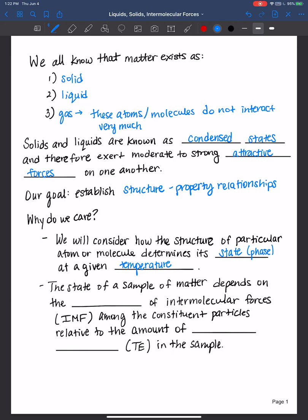The state of a sample of matter depends on the strength or the magnitude of intermolecular forces among the constituent particles relative to the amount of thermal energy in the sample. We will spend quite a time together in the next few videos discussing the different types of intermolecular forces, which I will abbreviate as IMF, and understanding their strength. And that will tell us a lot about how that molecule behaves with itself and with other molecules. And it all has to do with relative to the amount of thermal energy, which I will abbreviate as TE in this sample.